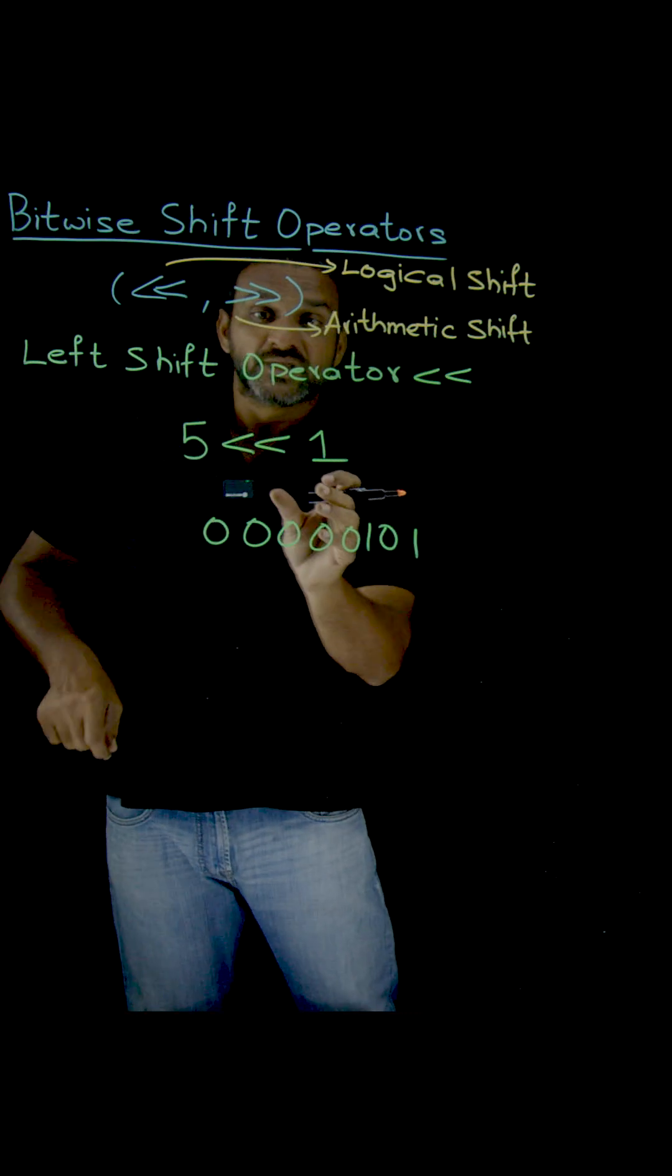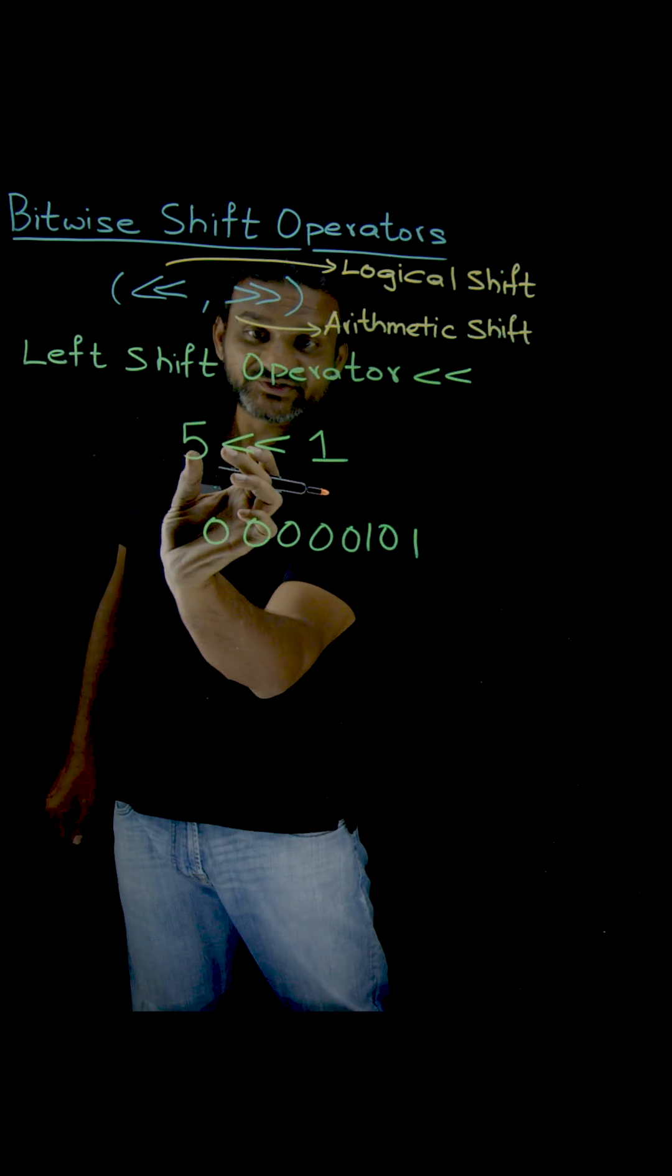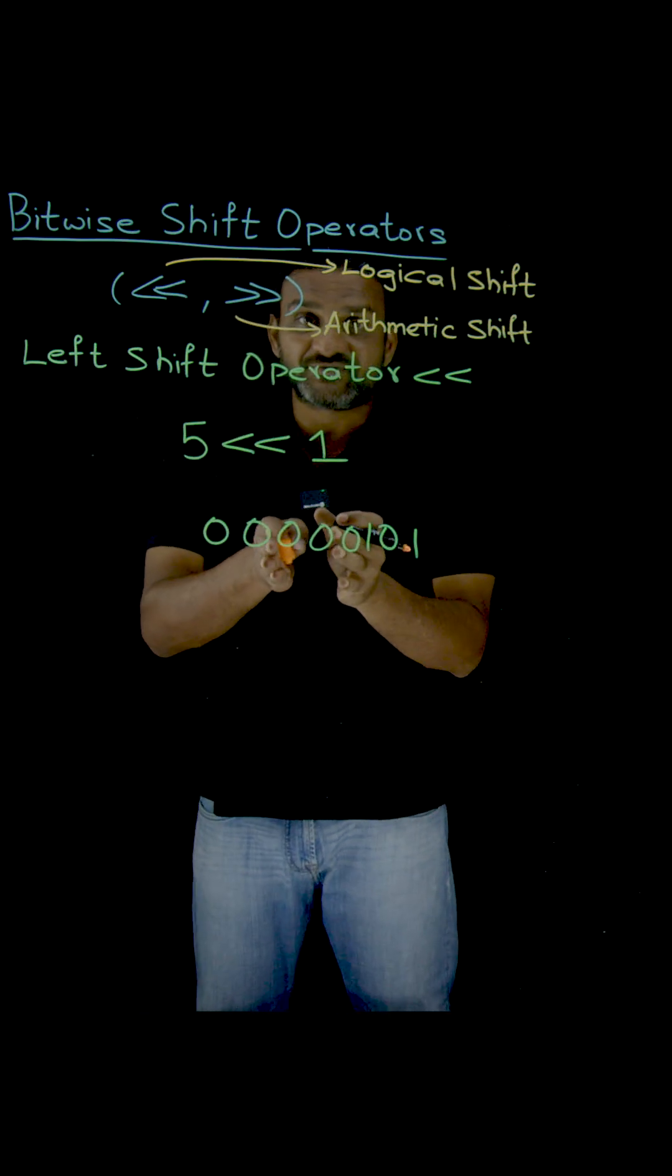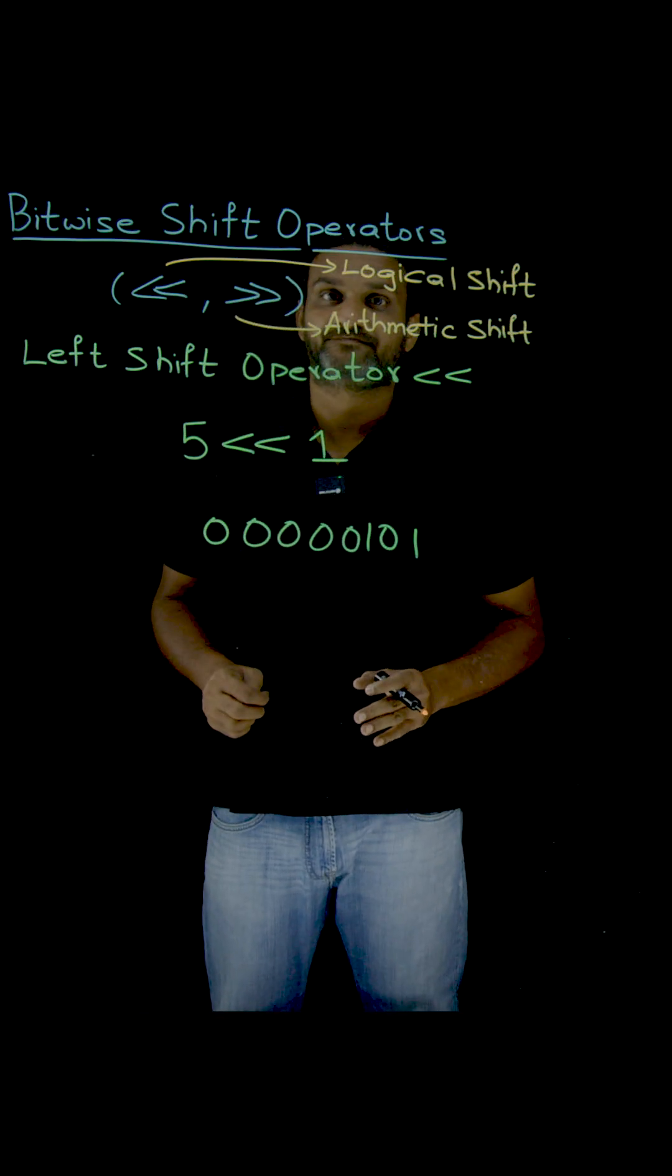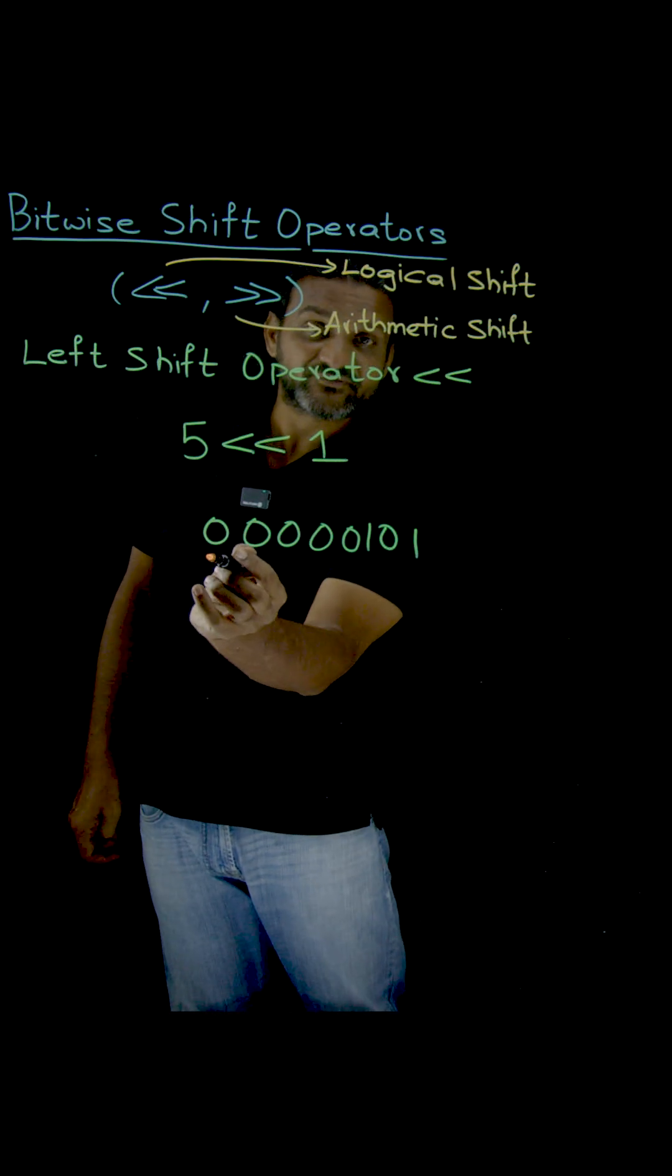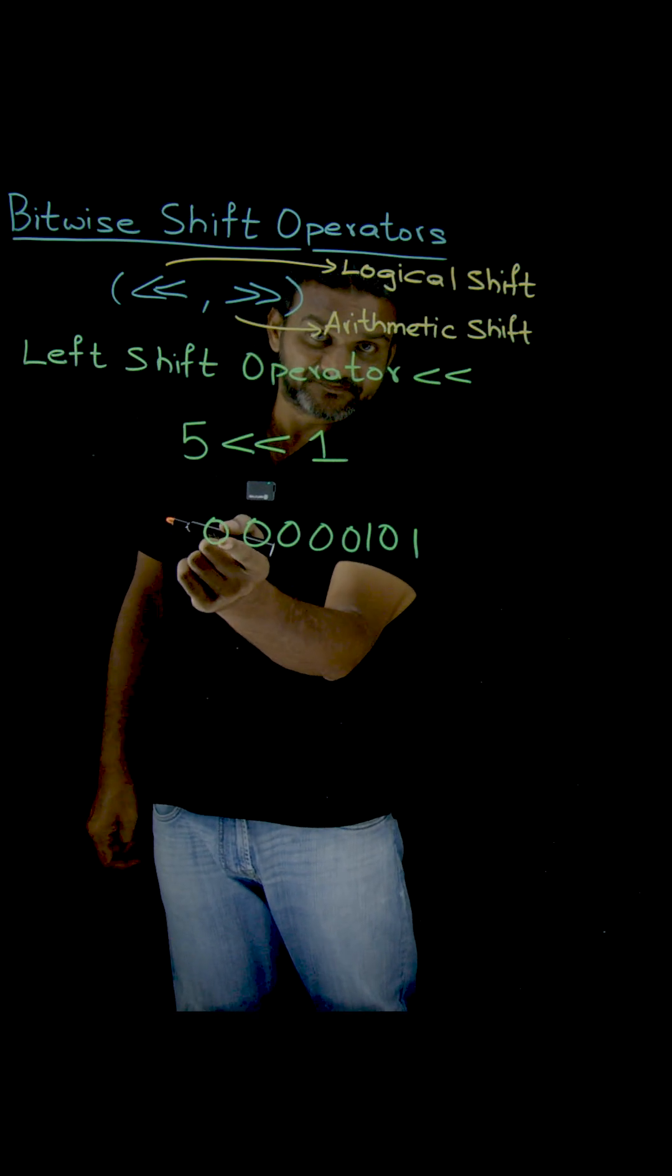What we are going to do is take the binary value of 5 and shift 1 bit towards the left side. What is the binary value of 5? This is the binary value of 5 represented in 8 bits.